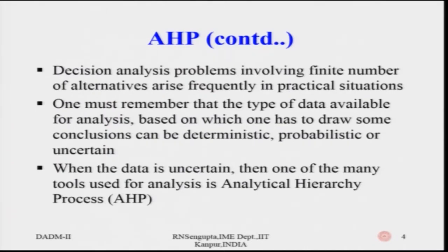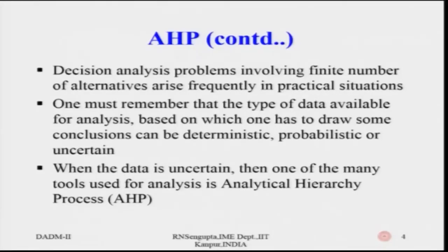One must remember when making a decision that the type of data available for analysis can be both deterministic as well as probabilistic or uncertain. If data is deterministic, we know for certain what the values are and how decision flows work. If probabilistic, we should have some probability distribution, but we focus on assigning probability values to make decisions easier. When data is uncertain, one of the many tools utilized is the Analytical Hierarchy Process.